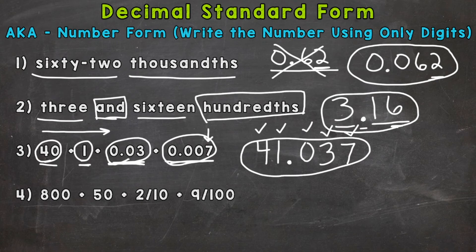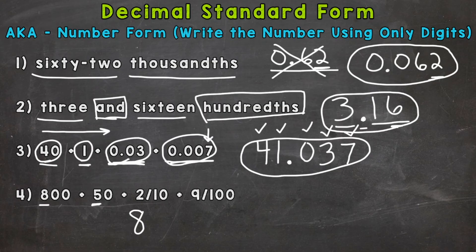Lastly, number four — we have expanded form where the decimal portion is represented by fractions, which is fine. You can represent decimals using fractions or decimals. We start with an eight with a value of eight hundred. Next is the tens place: this five has a value of 50, so we write five. Next is the ones place, but our next term is two tenths, so we went from the tens straight to the tenths. We do not have any ones in our expanded form, so we need a zero there.